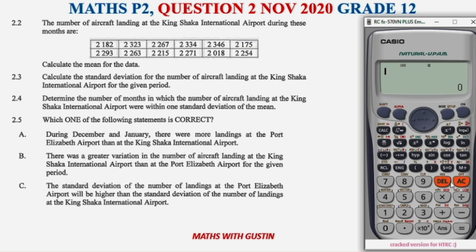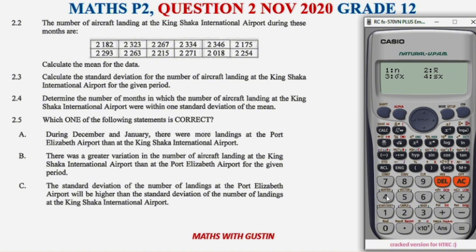While we're here with the calculator, let's also answer 2.3: calculate the standard deviation for aircraft landings at King Shaka International Airport. Go to Shift > Stats, then look for the standard deviation — it's the sigma x option. Choose option 3. Our standard deviation is 86.30.